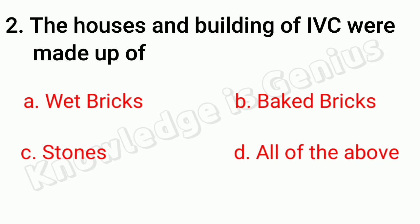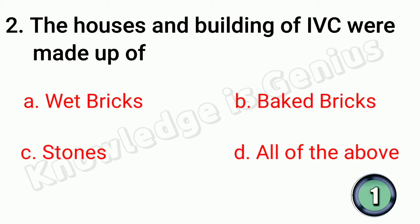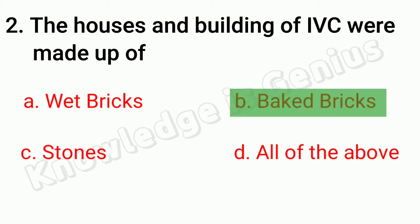The houses and buildings of Indus Valley Civilization were made up of: A. Wet bricks. B. Baked bricks. C. Stones. D. All of the above. Answer: B. Baked bricks.